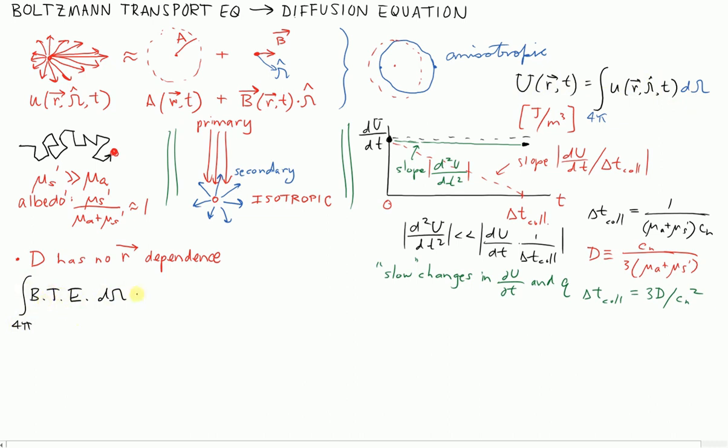If we integrate all the terms in the Boltzmann transport equation, we end up getting the following. Instead of an equation for d little u dt, we get an equation for the change in big U dt. And remember that that's only a function of position and time now. There's now no directional dependence of the light. This is the total energy density, energy per unit volume.